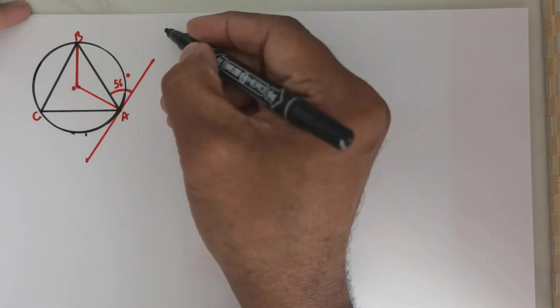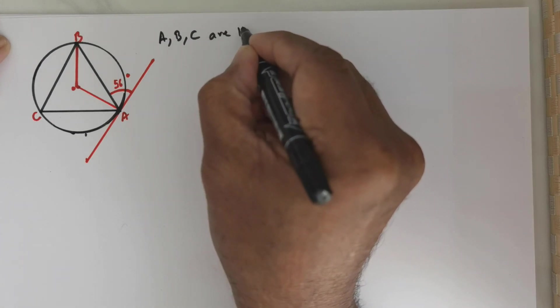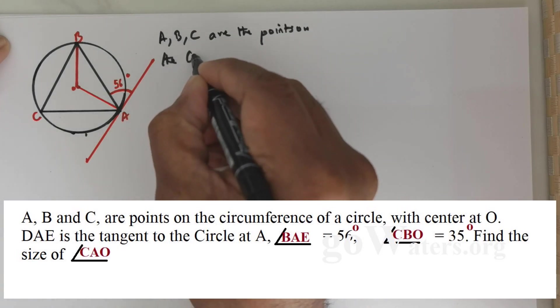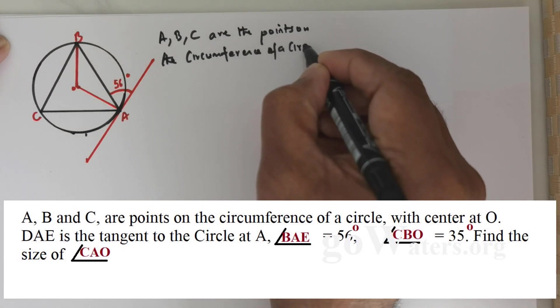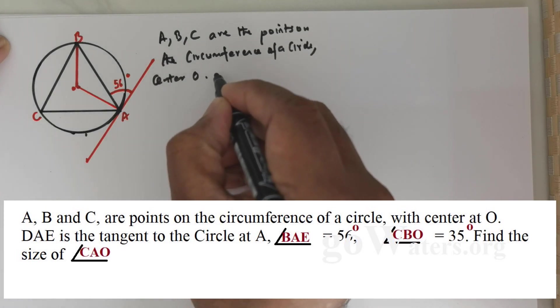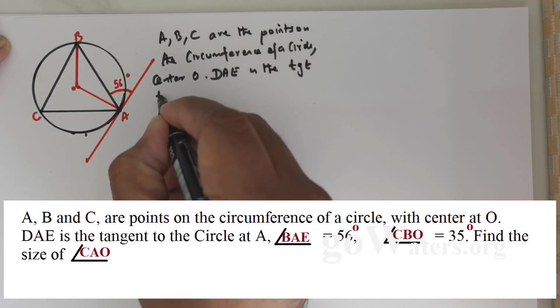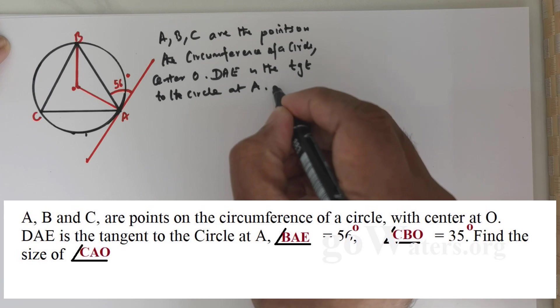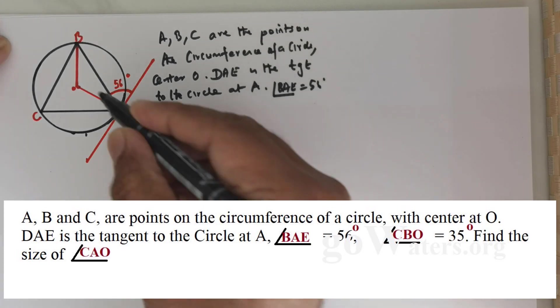Let me write down the question. A, B, C are the points on the circumference of a circle. The center is given to be O. DAE is the tangent to the circle at A, and then you got angle BAE is equal to 56 degrees.